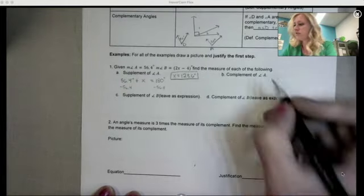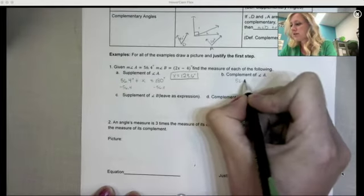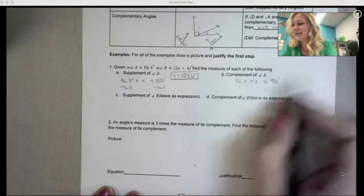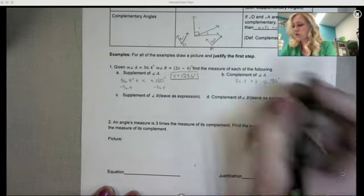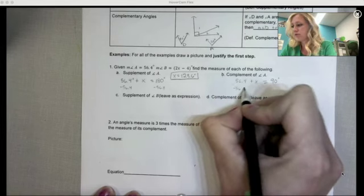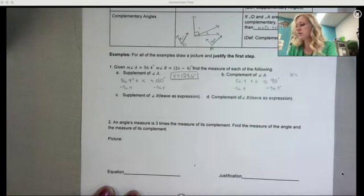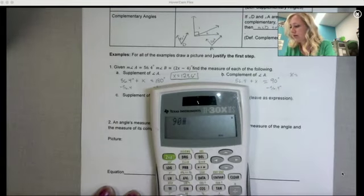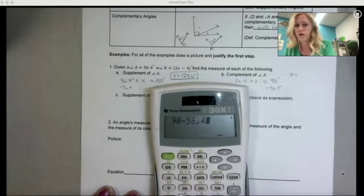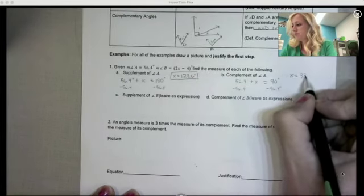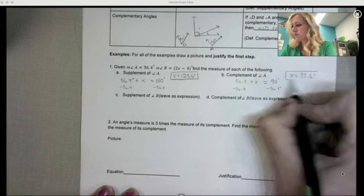So 123.6 degrees is the supplement of 56.4 because together they add to 180. Okay, so now we're going to find the complement. So this is very similar, but this time they don't add to 180, they add to 90. So we're going to set up this equation. To get x by itself, we're going to subtract 56.4. And so we get the complement. So if I do 90 minus 56.4, we get 33.6 degrees.